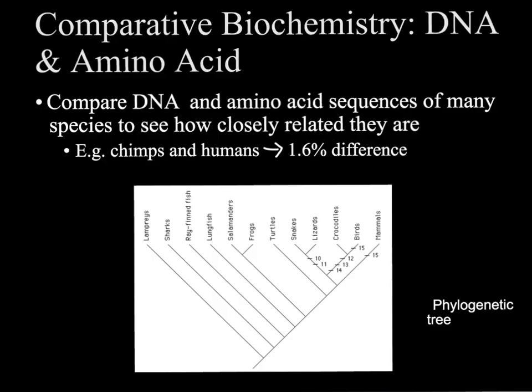By comparing this biochemistry — the DNA and amino acids — we can create what we call phylogenetic trees, which we can see here and will create in class, that show where different organisms have branched off. Looking at this phylogenetic tree, you can see that crocodiles and birds are more closely related than crocodiles are to turtles, or that frogs and salamanders are more closely related than lungfish and frogs, based on where those branches are.